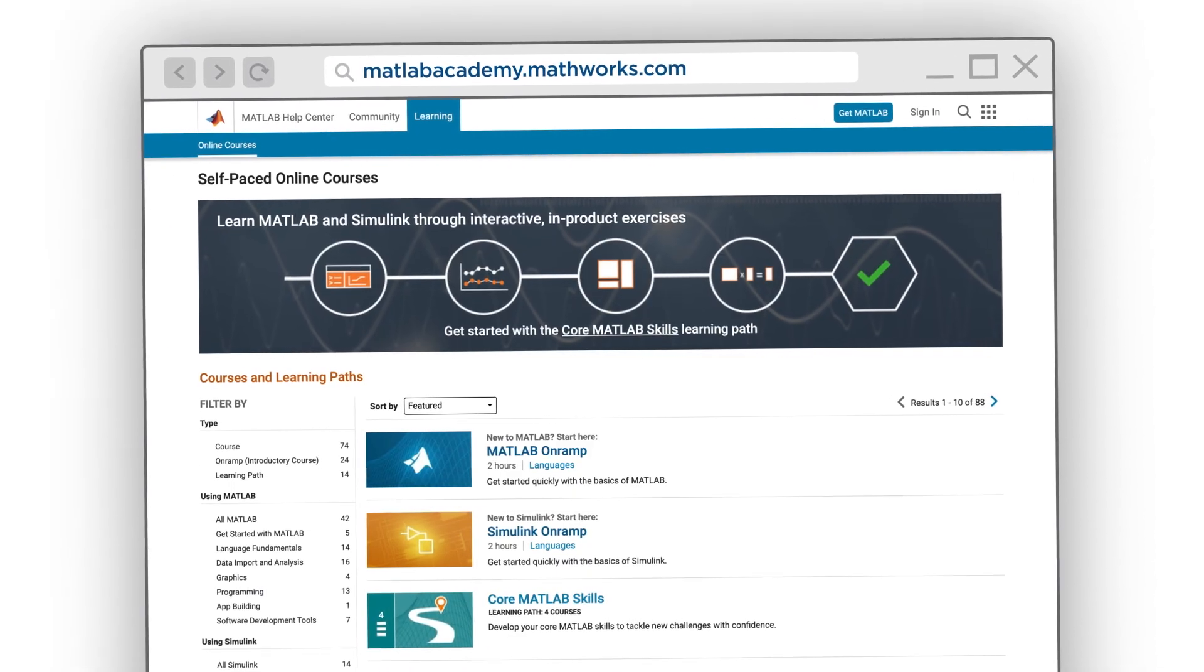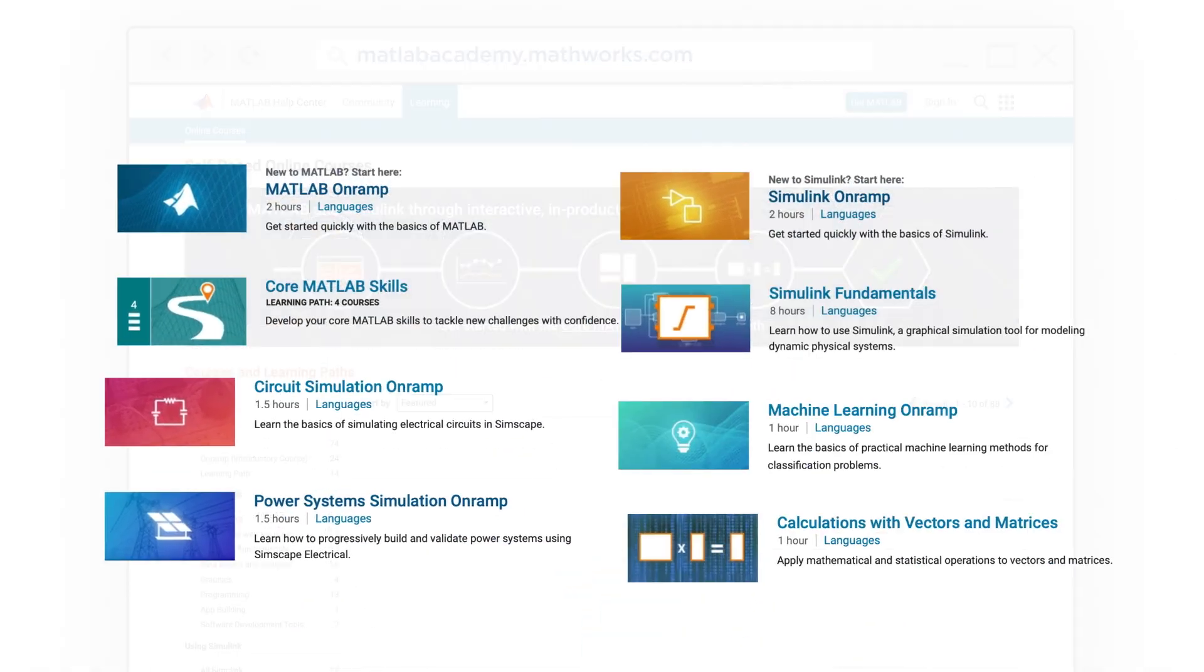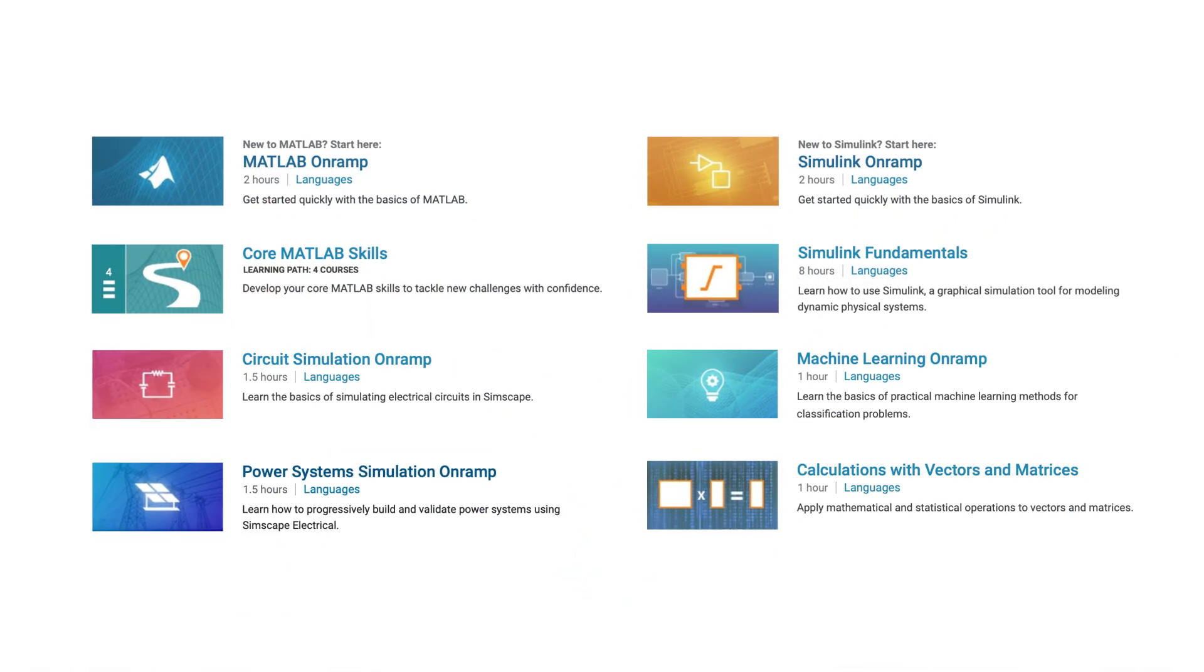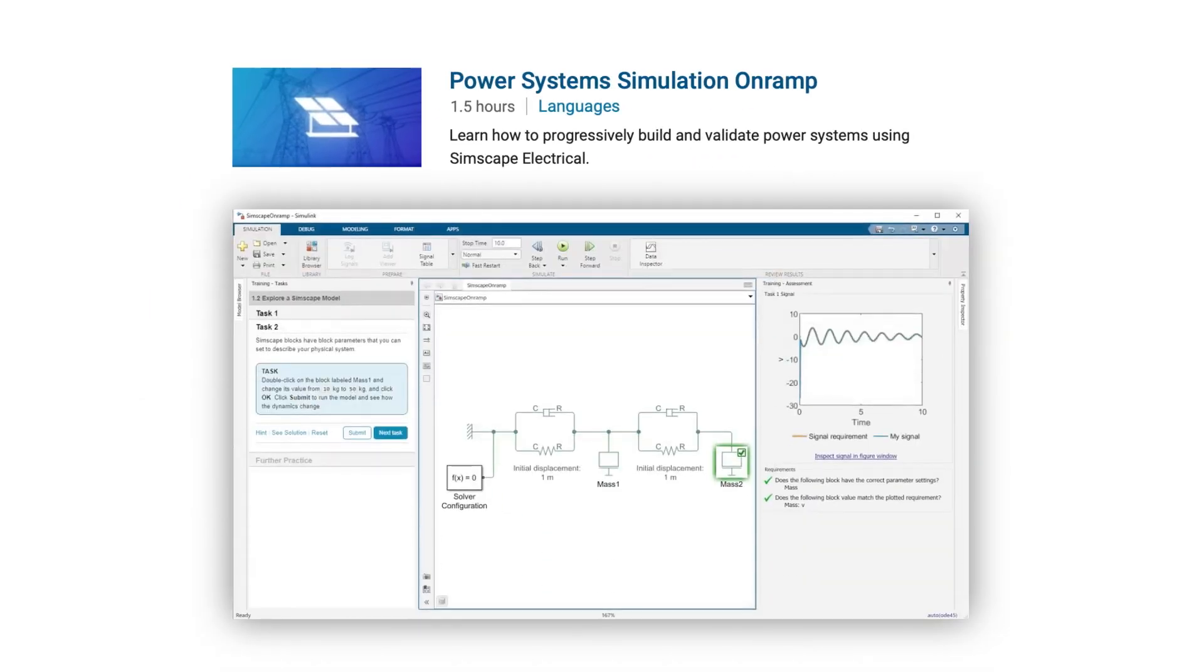We have on-ramps, for example, in a number of areas which you can take online. You are using the simulation models to learn the discipline, like power systems. It's a highly motivating experience being able to get that feedback from what you're doing. You're learning the disciplines, you're learning software. And because it's MathWorks, you're learning software that is used in industry. What other ways are there for staying up to date in terms of the technology and the tools?